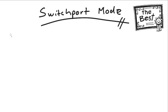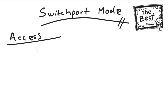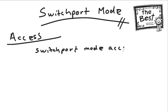Best practices regarding switchport mode deal with turning off Dynamic Trunk Protocol. Let me show you how easily this is done. First, let's talk about an access port. When you want to create an access port, you go under that interface and you say switchport mode access. You force the port to be an access port. This is a DTP mode of off — it means you are not going to trunk.